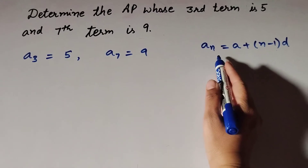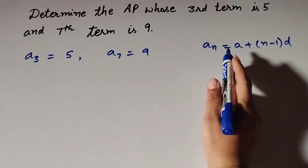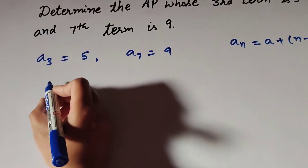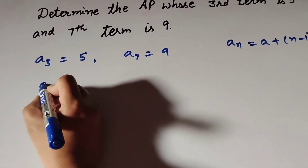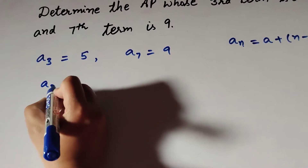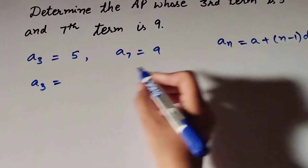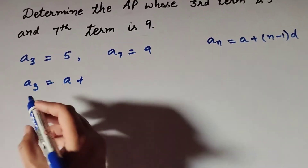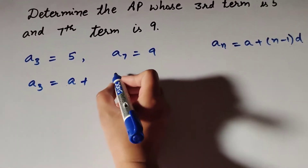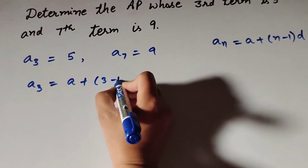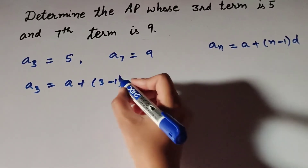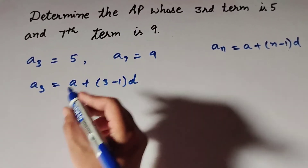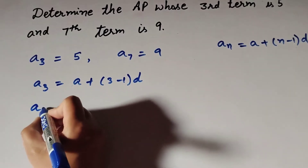By using this formula we can find any term. For a3, n is equal to 3, so a3 equals a — where a is the first term we have to find — plus (3 minus 1) times d, where d is the common difference we also need to find.